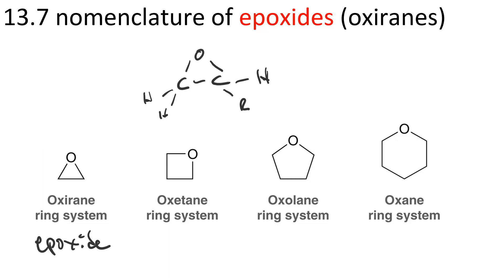A four-membered cyclic ether is an oxetane, a five is an oxolane or furan, and a six-membered cyclic ether is an oxane.